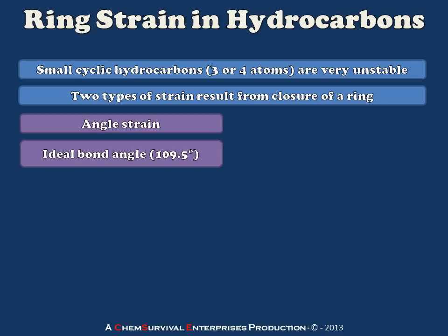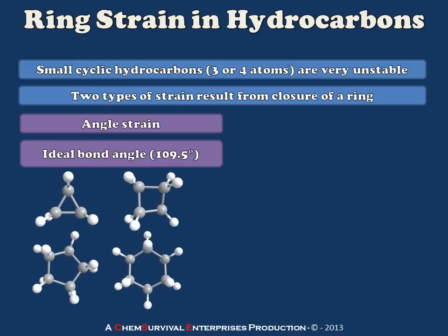The first of the two substrains is angle strain. We know that a typical CH₂ bond angle in a hydrocarbon — for example, a linear chain like hexane — should be about 109.5 degrees. So we're going to take a look at a few small cyclic molecules and measure these bond angles to see how they match up.